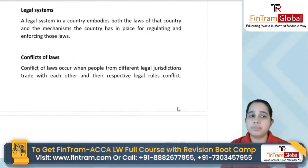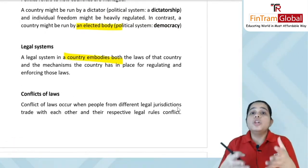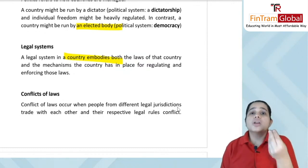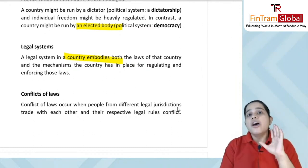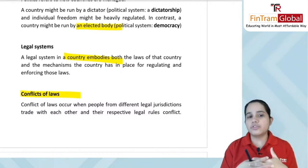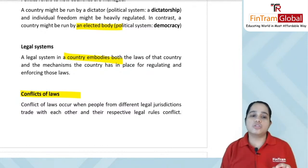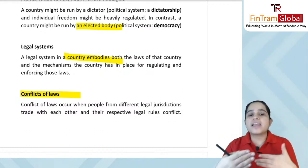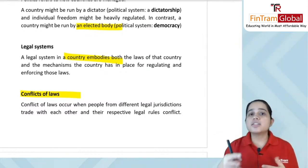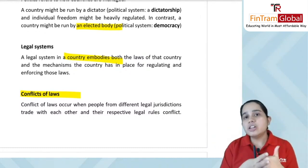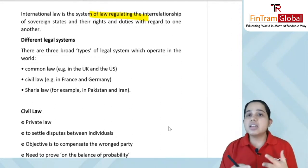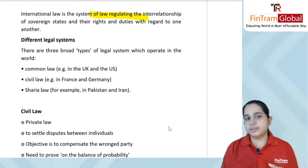Then we talked about legal systems. A legal system in a country embodies both the laws of the country and the mechanisms to regulate and enforce those laws — for example, the police working to regulate and enforce laws. Then we studied the conflict of laws. As the name suggests, when people from different legal jurisdictions trade, their respective legal laws can conflict. If I am from one place and another person is from a different country, they have different laws, and if there is an issue, those laws conflict — that is the conflict of laws. There is also an international law system which regulates the interrelation of sovereign states and their rights and duties with regard to one another.